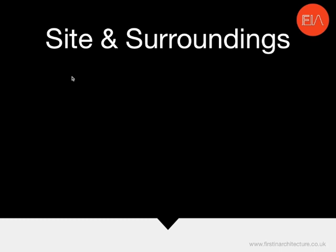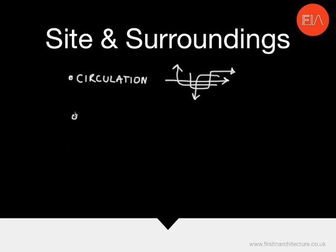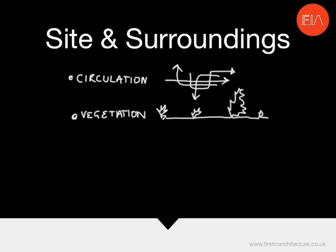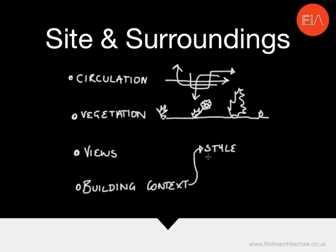The next thing to look at is circulation — how do visitors, pedestrians, or traffic near to the site flow around it or within it? Vegetation: is there landscaping, greenery, shrubs, trees, open spaces? Take this on board. Views: what are the best views to and from the site, and which is most likely to be a feature aspect? And then the building context: what style, period, or state of repair are the surrounding buildings? Is it a historical area, a conservation area, or are the buildings nearby perhaps listed?